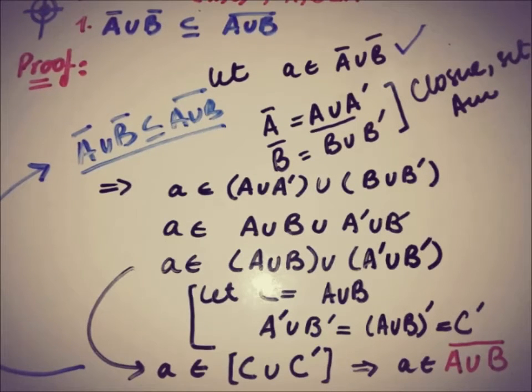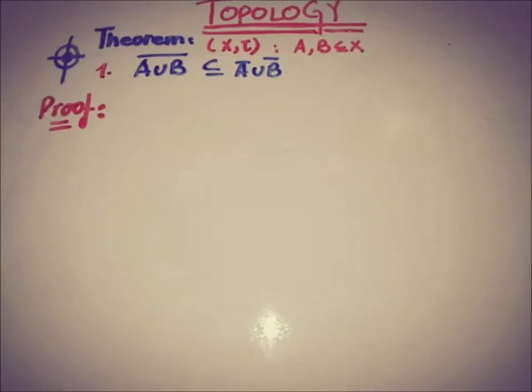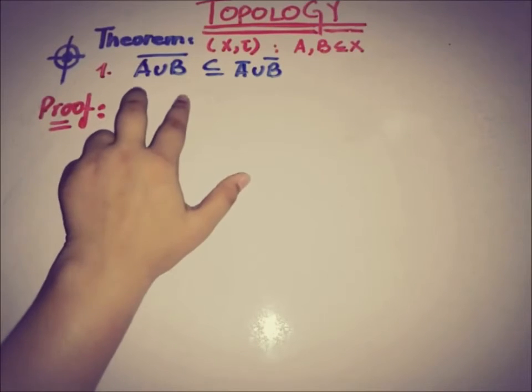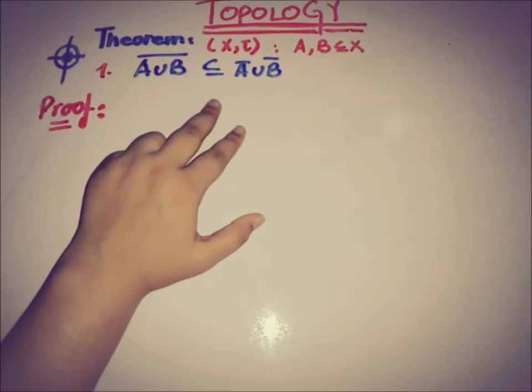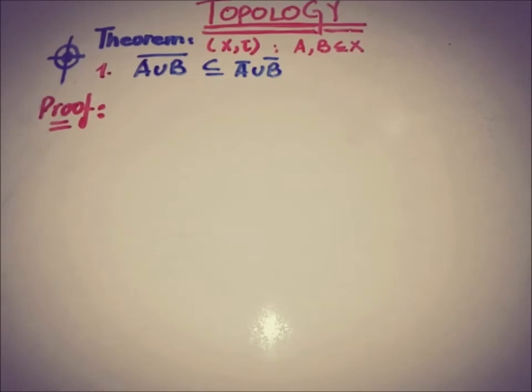Now moving toward the second part. For the second part our target is that A union B closure is a subset of A closure union B closure.